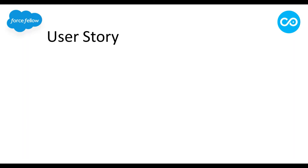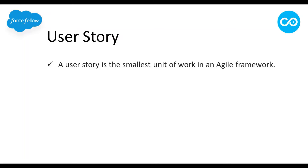Next we have User Stories. A user story is the smallest unit of work in an agile framework, containing everything related to new implementations or bug fixes — what we need to do and where. Copado has built-in objects to support the agile framework, allowing us to create projects, epics, releases, and user stories. Copado also provides integration with third-party agile tools like Jira and Azure DevOps to pull user stories and other agility details like projects, epics, and sprints, with the ability to schedule periodic sync.